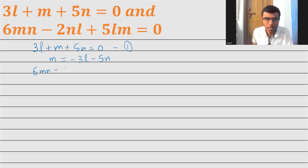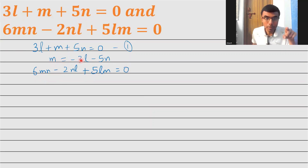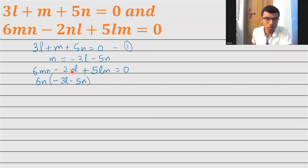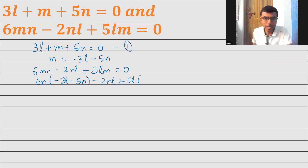Now my second equation is 6MN minus 2NL plus 5LM equal to 0. Now what is my M? My M is nothing but minus 3L minus 5N. That's what I'm going to substitute in this equation. So this will be nothing but 6N into, in place of M, I'm going to write minus 3L minus 5N, and then minus 2NL — just keep it as it is — plus 5L into, in place of M, minus 3L minus 5N equal to 0.